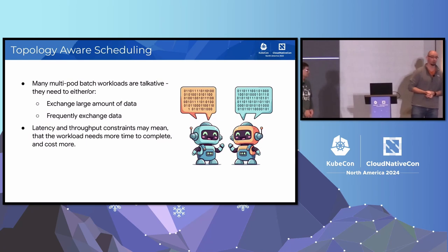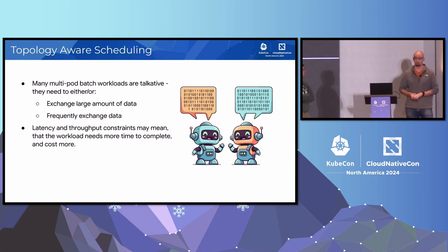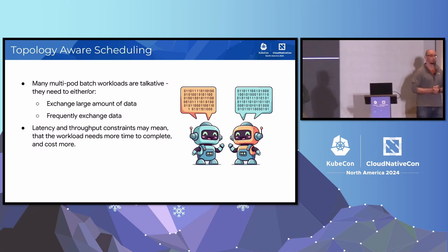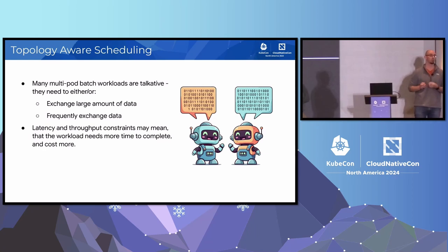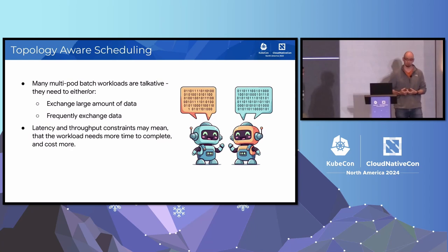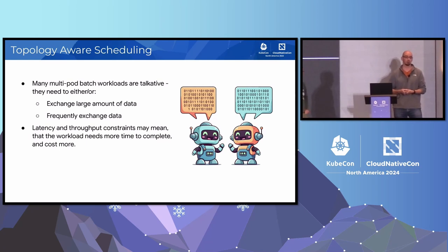Kueue has been around for a while - it's relatively new but also relatively mature. Users are requesting more and more features. One very important feature was the ability to take advantage of networking structure. Many ML workloads require a lot of pod-to-pod communication. The further the pods are from each other, the more problems with communication - latency is bigger, bandwidth is smaller, and computation may take longer. GPUs are super expensive these days, so the sooner the computation completes, the cheaper it is.